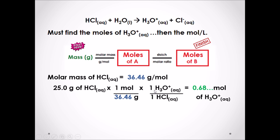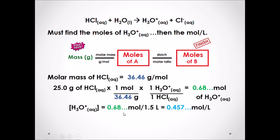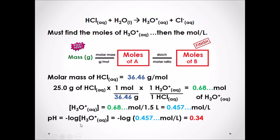Using the 1 to 1 molar ratio, there are 0.68... moles of H₃O⁺ in the solution. Don't round this value yet. We then divide the moles of H₃O⁺ by the total volume of 1.5 liters, giving a concentration of H₃O⁺ of 0.457... moles per liter. Putting that into our pH calculation — pH equals the negative log of [H₃O⁺] — the pH of the solution is 0.34.